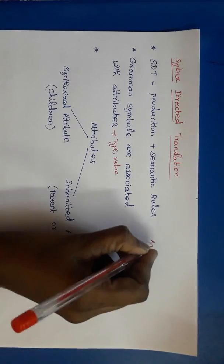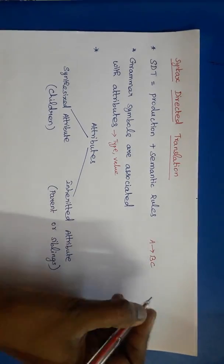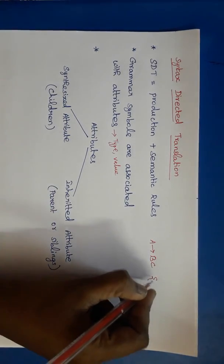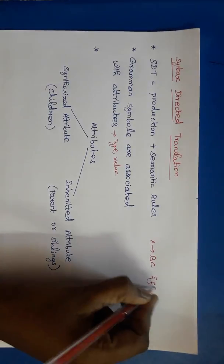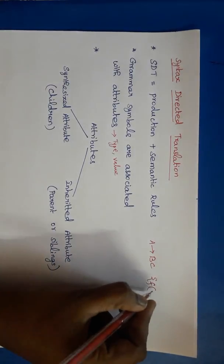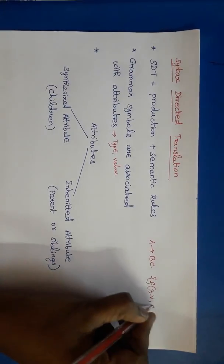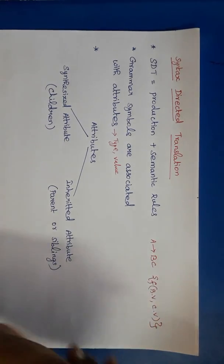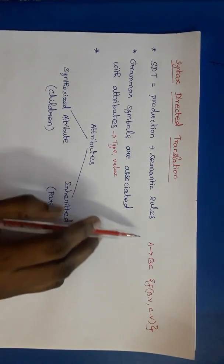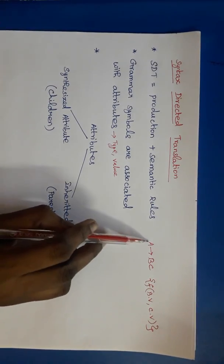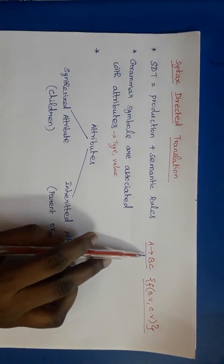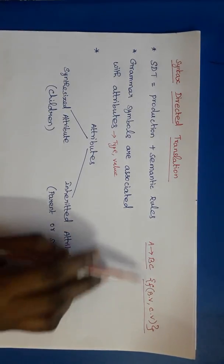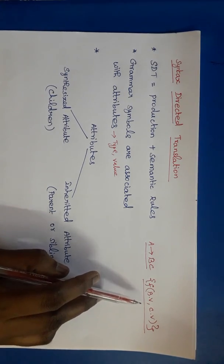For example, A tends to BC followed by the semantic action — it may be any function, a function of B1.val, C.val, etc. So, grammar production plus semantic rule is called as SDT. Each grammar production is associated with the semantic rule.